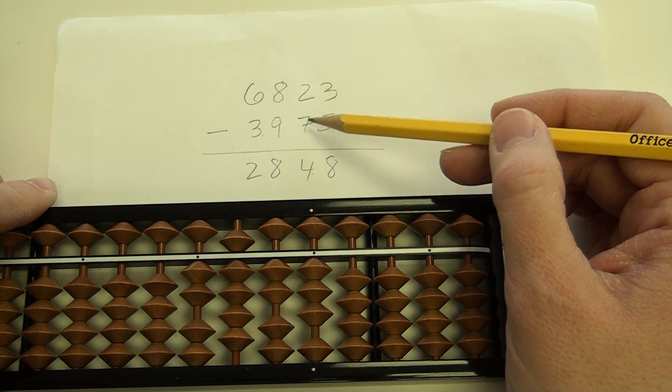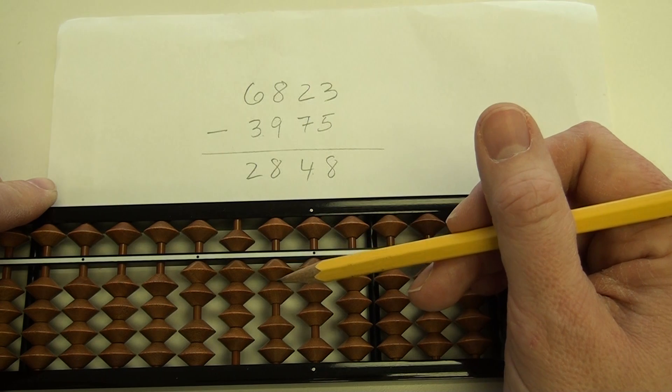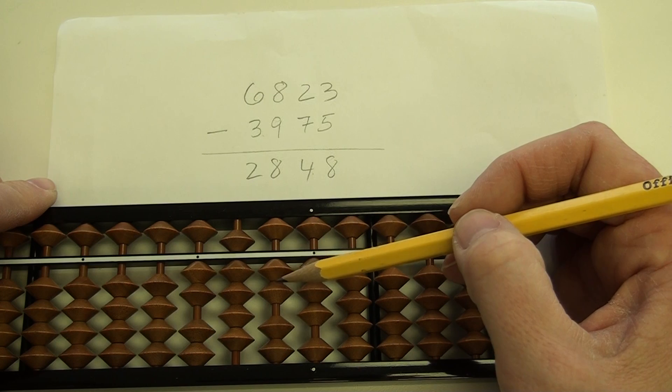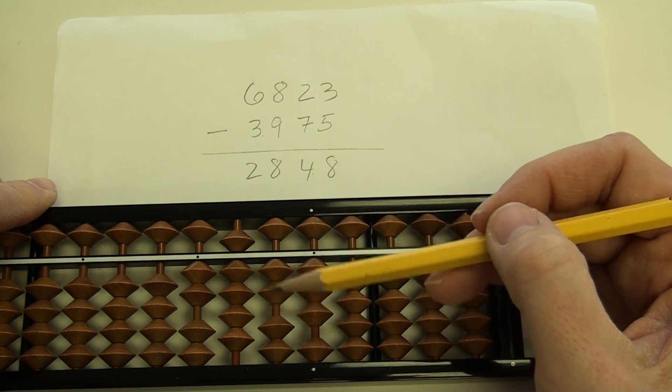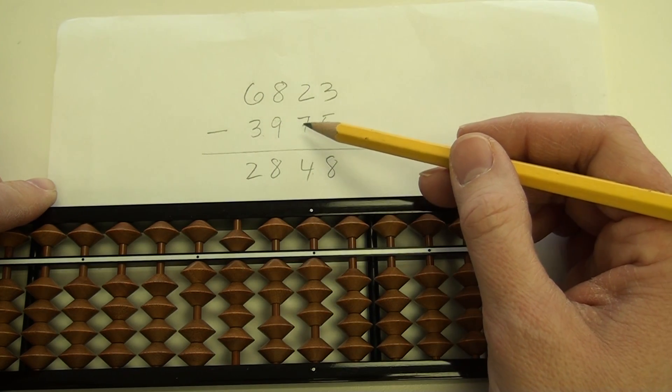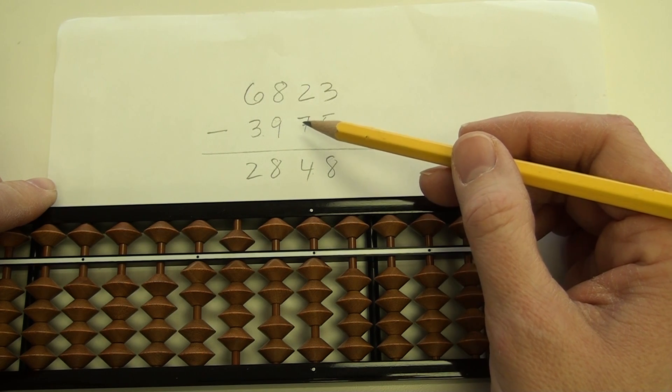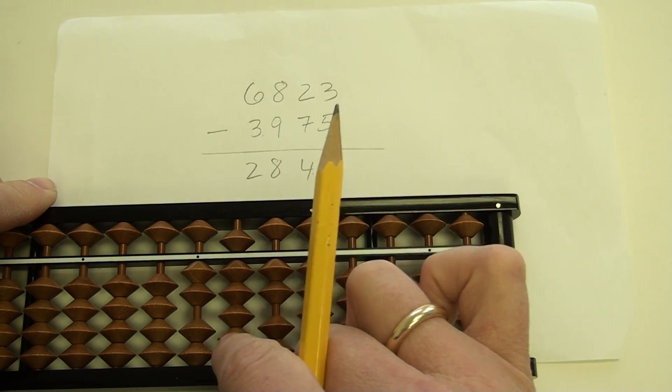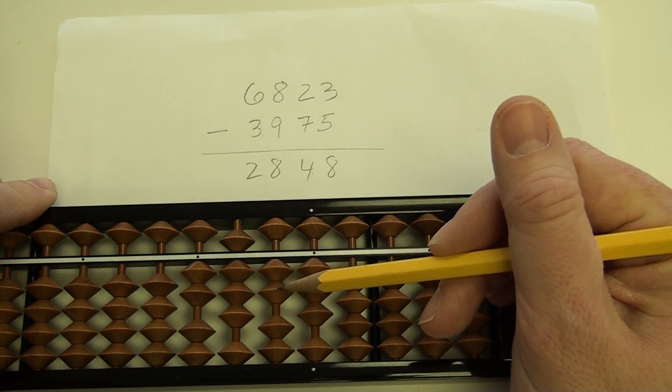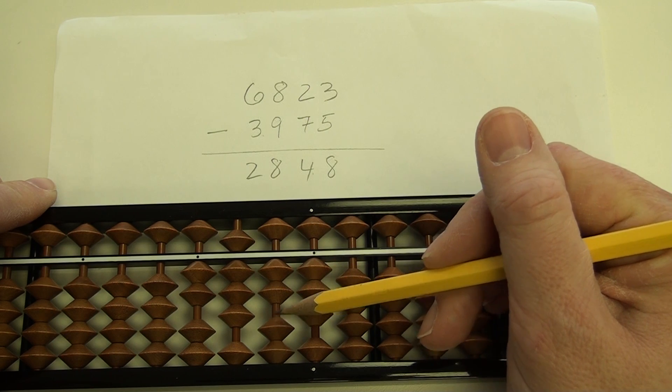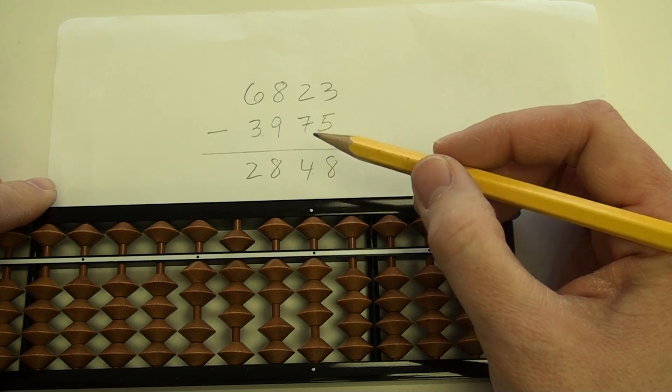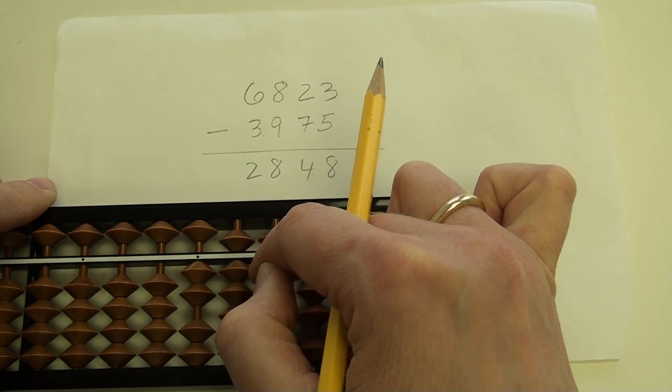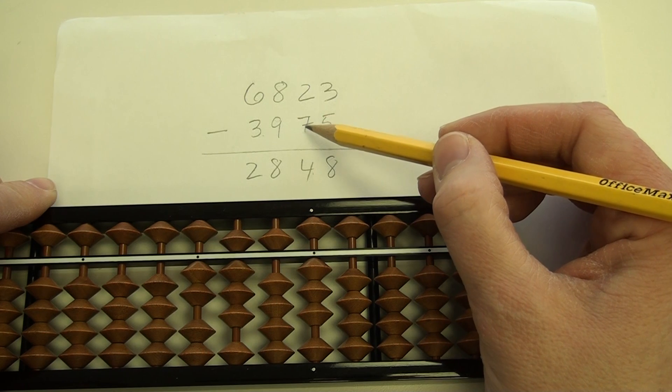Now I have to take care of the 7 on the 10's rod. So here's my 10's rod. I want to take away 7. 7 would be a 5 plus 2, but I don't have the 5, so I have to think again. I've got to go to my 10's complement. Subtracting 7 is the same as subtracting 10 and adding 3. So I'm going to subtract 10, but now how do I add 3? I only have 2 down here. So adding 3 is equivalent to adding 5 and subtracting 2. So I'm going to add 5, subtract 2. Now I've taken care of this one.